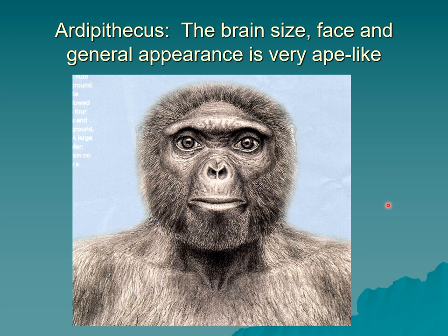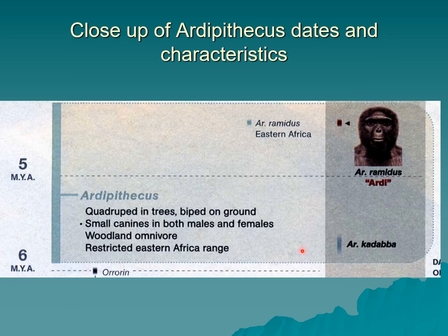This is how Ardipithecus would have looked. For most of you, when you look at this, what you see is an ape-like creature — and very much so. Ardipithecus had a brain, face, and general appearance of an ape. See the large brow ridges? Importantly, Ardipithecus doesn't have a forehead, and has a brain only slightly larger than a chimpanzee today. They lived in Eastern Africa, were quadrupeds in the trees, bipeds on the ground — and that bipedalism is the central characteristic that puts them in our ancestral lineage. That, and their teeth: they have small canines in both males and females. They lived in a woodland environment and ate many different types of food.